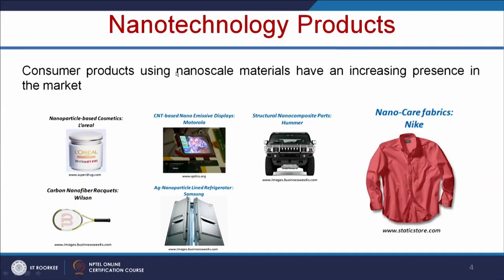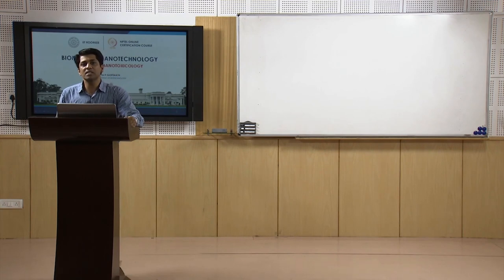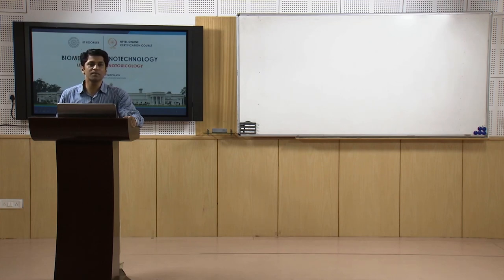Why do we have to study nanotoxicology? These are the various consumer products that use nanoscale materials. For example, L'Oreal is using nanoparticle-based cosmetics, Motorola is using CNT-based nano emissive displays, and we also have nano care fabric shirts and carbon nanofiber rackets. In India, several washing machines are coated with silver nanoparticles, and some soaps in TV advertisements are also using silver nanoparticles. What happens is that these silver nanoparticles go into water bodies, affecting living organisms there and contaminating groundwater, causing toxicity — and those effects are not yet well understood.